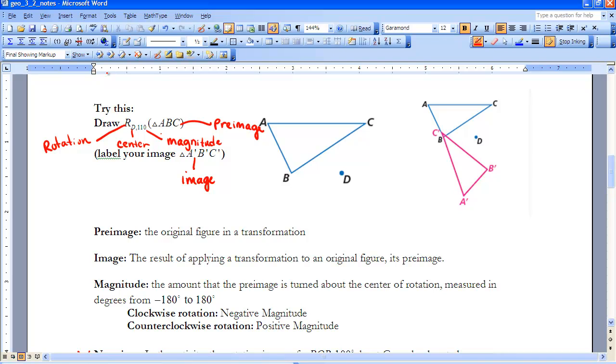And then when you do the rotation in class, we're going to label that image triangle A prime, B prime, C prime. So that is our image. And here you can notice, here's an example of what your finished product is going to look like.